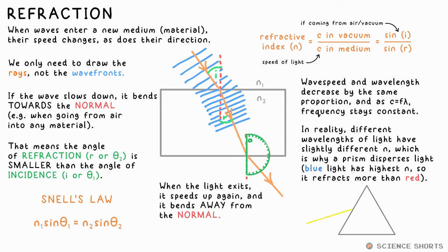Bear in mind that in reality, the refractive index of a material varies with wavelength. Blue light's refractive index will always be higher than red lights for the same medium. That means that it refracts more than red. That's why white light undergoes dispersion when it passes through a prism.